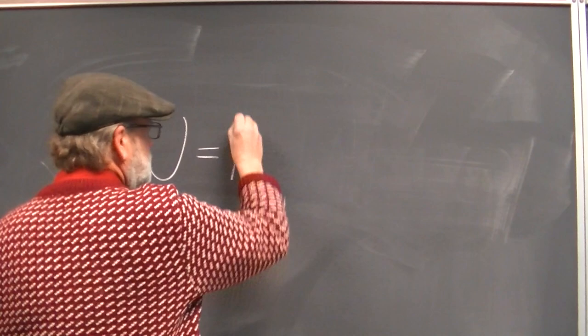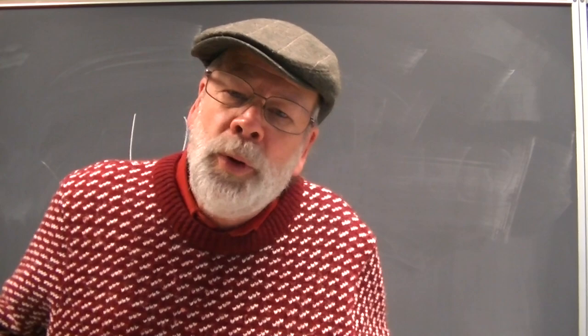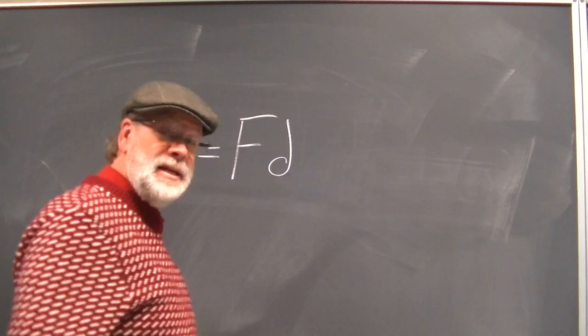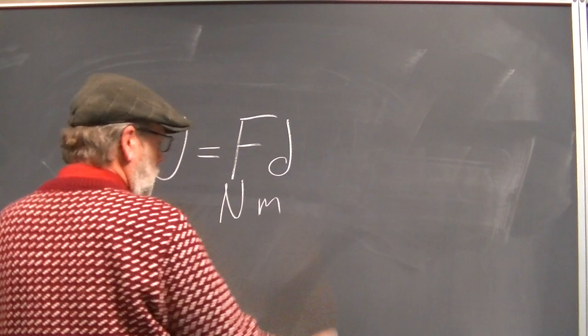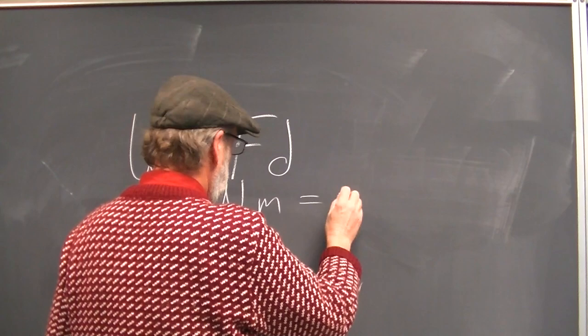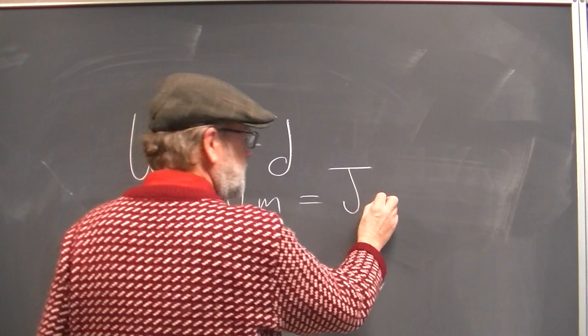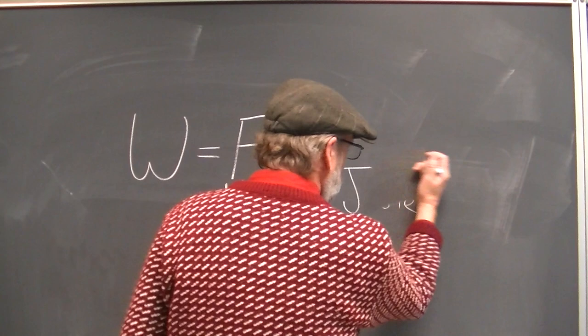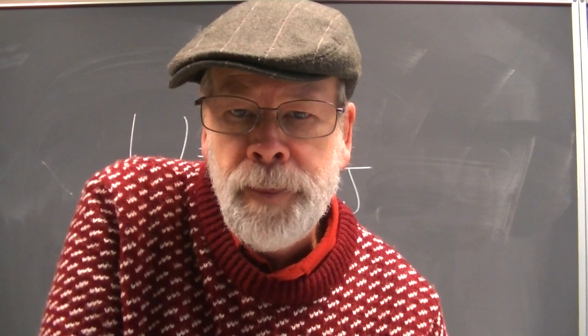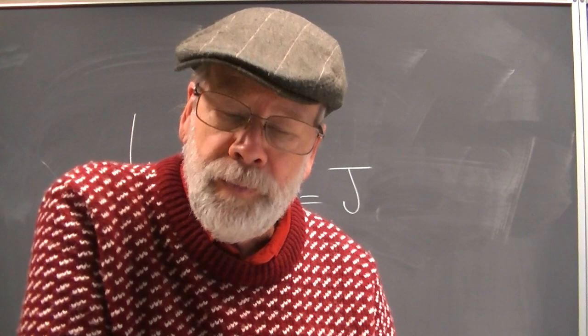The formula for work equals the force multiplied by the distance I pushed the object through — force times distance. What are the units of that? We have newton meters. A newton meter is equal to a brand new unit called a joule, named after James Joule, a famous physicist. It's abbreviated J, but it's called a joule — a newton meter equals a joule, and it's a measure of work. So in order to do work on something, I must move it.